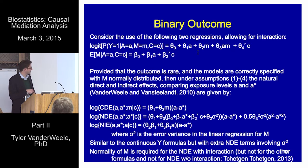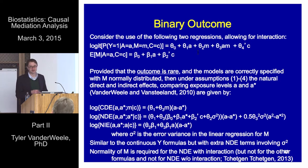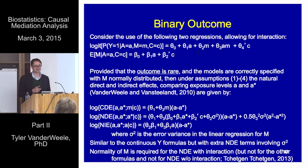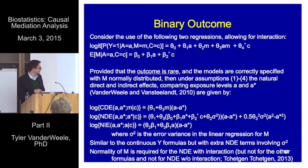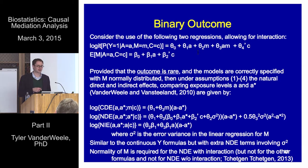For the log controlled direct effect, log natural direct effect, and log natural indirect effect — these are given by combinations of the regression coefficients of the two regressions. The controlled direct effect and the natural indirect effect look exactly as they did before — the same combination of coefficients. The natural direct effect is a little more involved and also involves sigma squared, the variance of the error term in the mediator regression model.